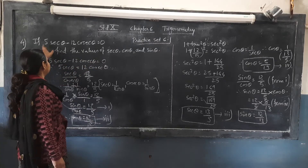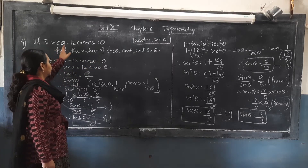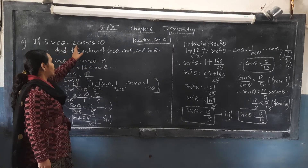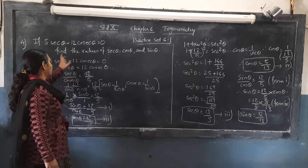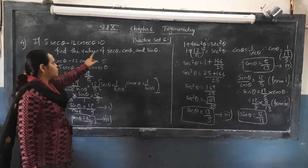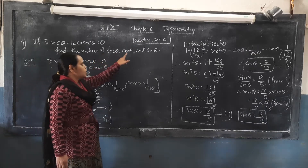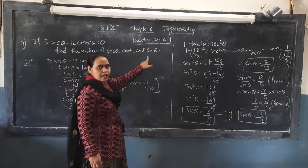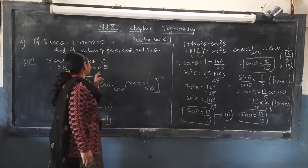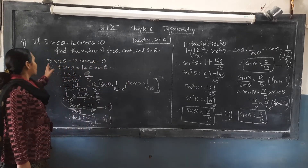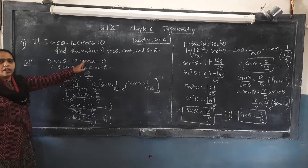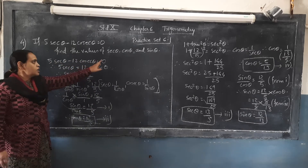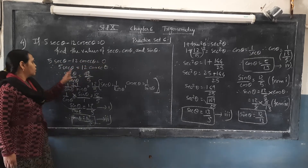Problem 6.1: 5·sec θ minus 12·cosec θ is equal to 0. Find the values of sec θ, cos θ, and sin θ. So here, 5·sec θ minus 12·cosec θ is equal to 0.